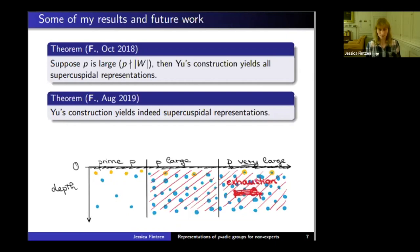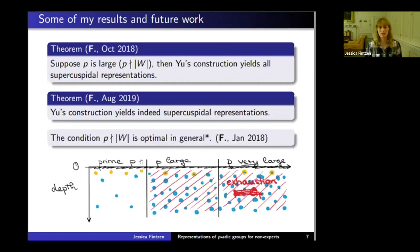So this is now the current state of the art. Moreover, I also expect that the bound where we get exhaustion—the assumption that p is large—is optimal in general.